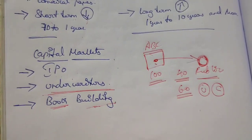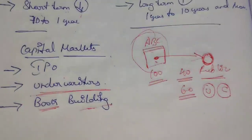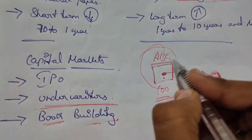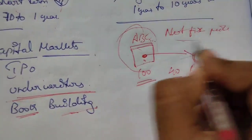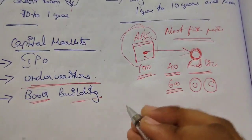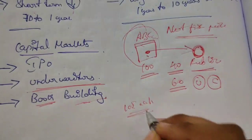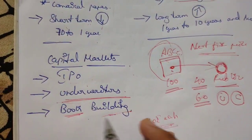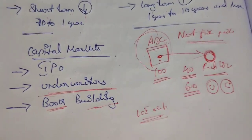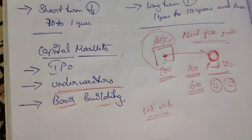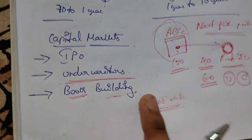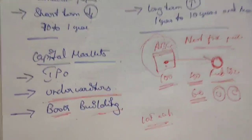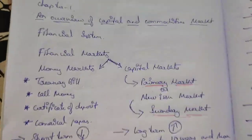Now, what is book building? For a new company like ABC that doesn't have goodwill or a good image in public, they will not fix the price of shares themselves. Unlike the fixed price of 10 rupees each we know from accountancy, the price here is fixed by the public — this process is called book building. The price of shares is fixed by the public, not by the company. This process is used because the company doesn't have a good image in public.